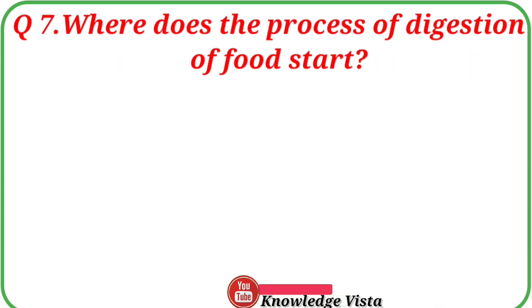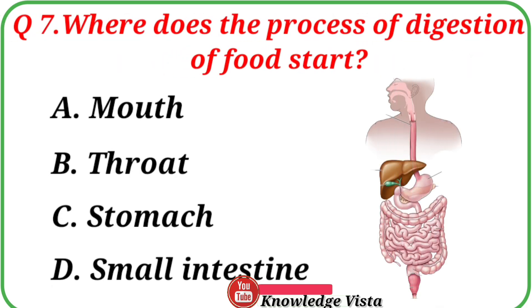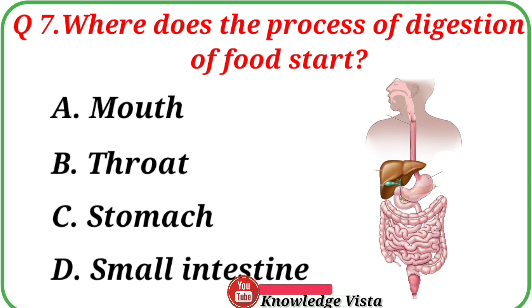Question No. 7: Where does the process of digestion of food start? Your options are: A. Mouth, B. Throat, C. Stomach, D. Small Intestine. Correct answer is Option A, Mouth.